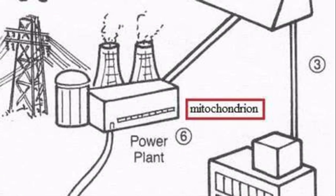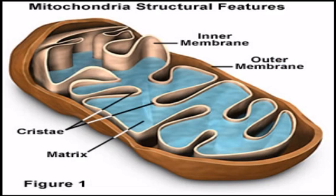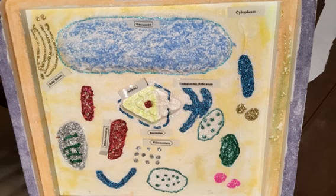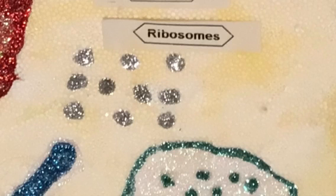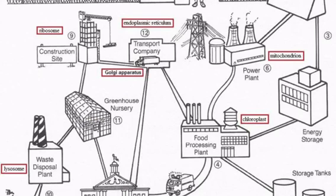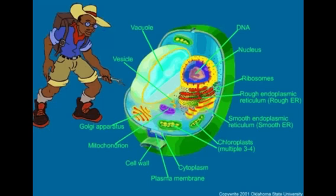The mitochondria are responsible for combining sugars and oxygen particles to form energy through a process called ATP. ATP provides energy to the cell, which is either used on the spot or stored in the vacuole for later use. The ribosomes make the proteins required to build the cell, similar to a lumber yard in the city that stores lumber used to build houses. The ribosomes are one of the major particle groups transported on the Golgi apparatus, which in turn are transported around the cell by the endoplasmic reticulum.